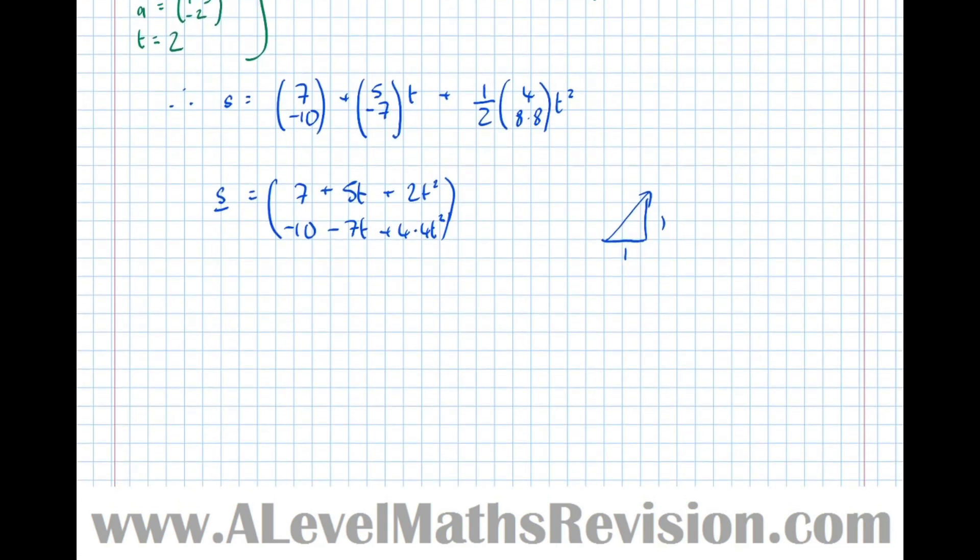Therefore, if I find velocity here, I know to find velocity, I differentiate displacement. So dS by dT equals, differentiating that, I get 5 plus 4T, and here I get minus 7 plus 8.8T. And that's equal to velocity. If it's north-east, then I know this component here is equal to this component here.